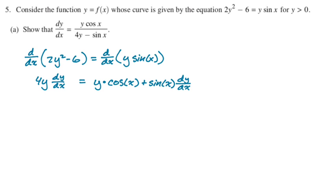So we get this. Now we just need to solve for dy dx. I'm going to take sine of x times dy dx and subtract it from both sides, and then I'm also going to factor dy dx out on the left. So I'm going to get 4y minus sine of x quantity dy dx. Now I'm just going to divide, and I will have matched what I was supposed to, and we're off and running.